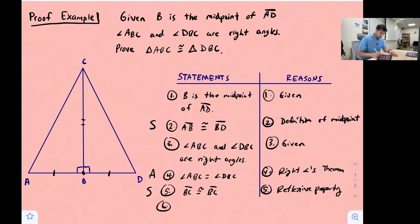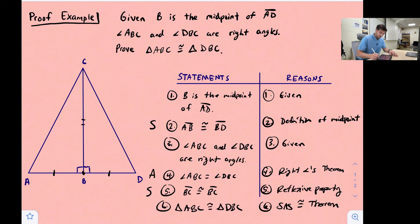Statement six: triangle ABC is congruent to triangle DBC. Our reason is the SAS Congruence Theorem — the Side Angle Side congruence theorem.